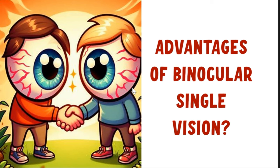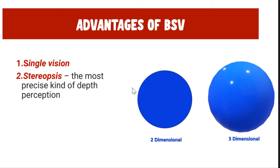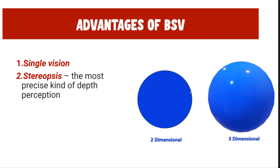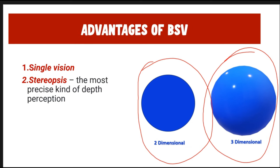The advantages of binocular single vision include: first, the advantage of single vision — it helps us see single images, otherwise we would have diplopia. The second advantage is stereopsis. That depth perception we get from three-dimensional objects in real life is because of binocular single vision — being able to use both eyes simultaneously. The most precise kind of depth perception, known as stereopsis, is basically a gift of binocular single vision.